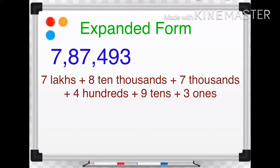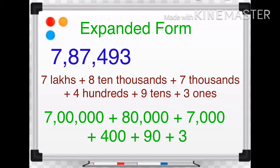Now, as per method two, we can expand this number as 7,00,000 plus 80,000 plus 7,000 plus 400 plus 90 plus 3.